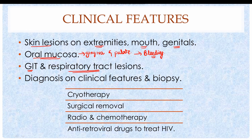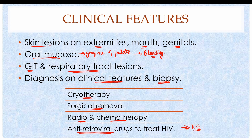The diagnosis of Kaposi Sarcoma is based on clinical features, and the gold standard is histological study of the biopsy. Treatment options include cryotherapy with liquid nitrogen, surgical removal of patches or nodules, and radiotherapy or chemotherapy when beneficial. In HIV-associated Kaposi Sarcoma, antiretroviral drugs treat the HIV infection and also cause regression of the Kaposi Sarcoma. Iatrogenic or transplant-associated Kaposi Sarcoma is very difficult to treat because attenuation or omission of immunosuppressive therapy results in graft rejection by the host.